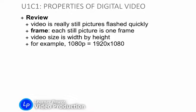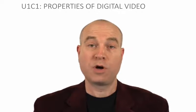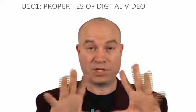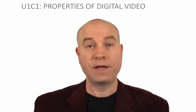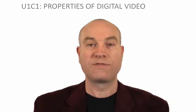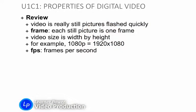For example, when we call video 1080p, what we mean is that it is 1920 pixels wide by 1080 pixels high — that is its width and height. We also talk about video in terms of its frames per second: how many frames, or still pictures, flash every second. In this class I often use 30, but different parts of the world use different frame rates, and frame rate is part of the equation we're going to learn.